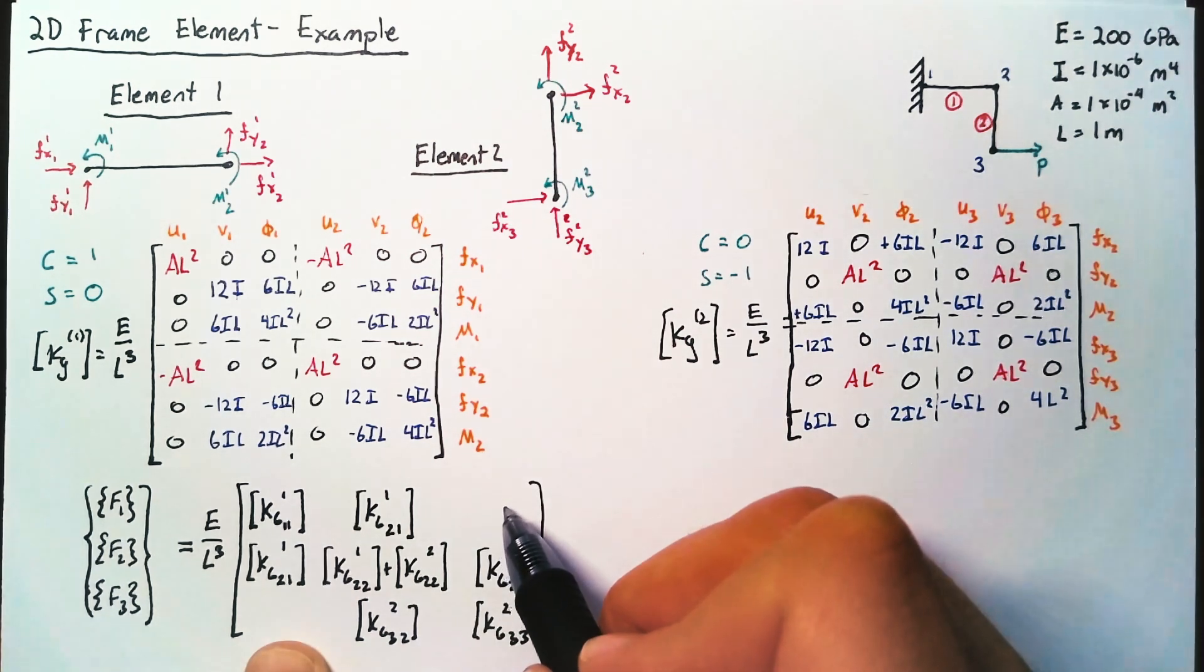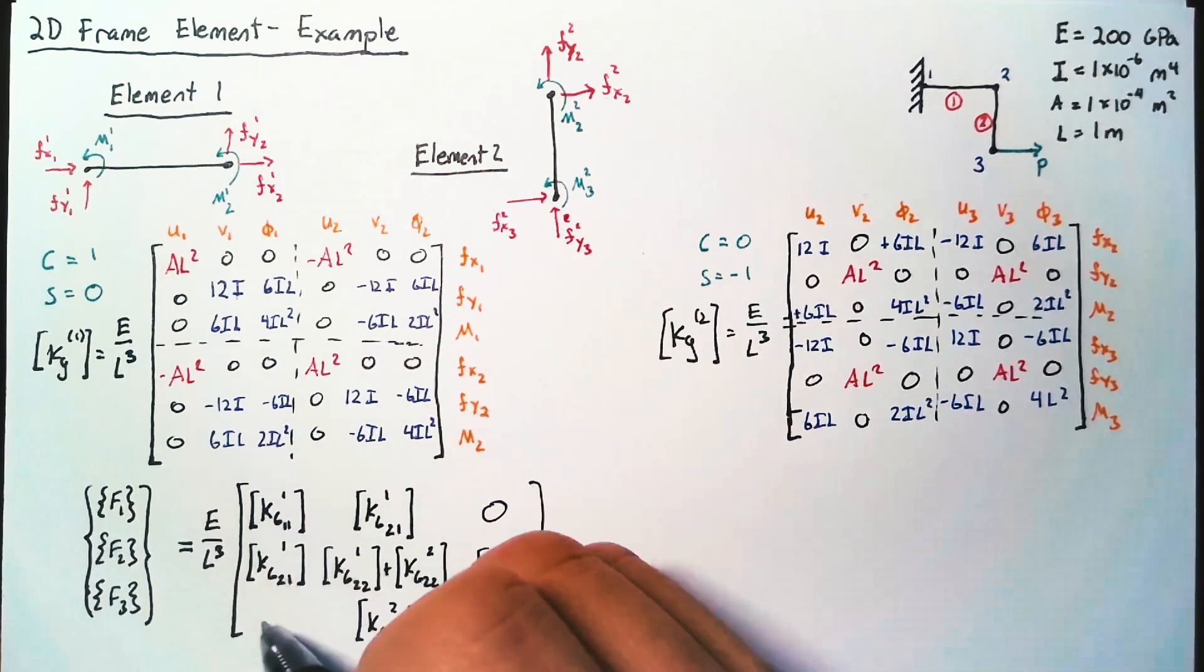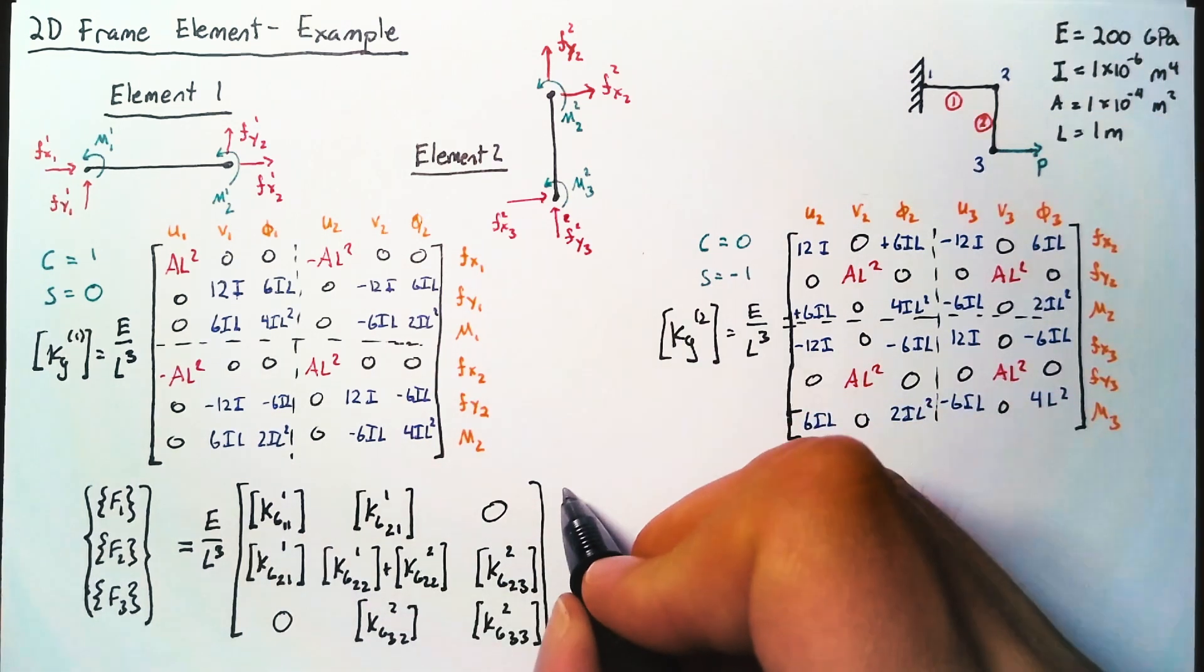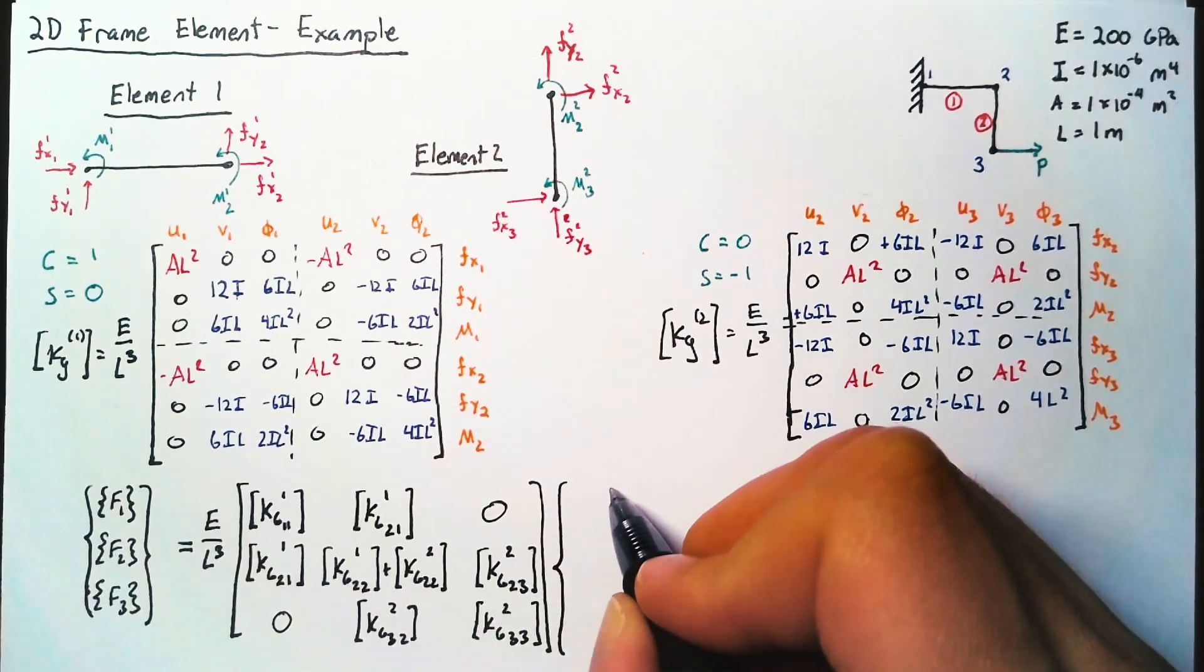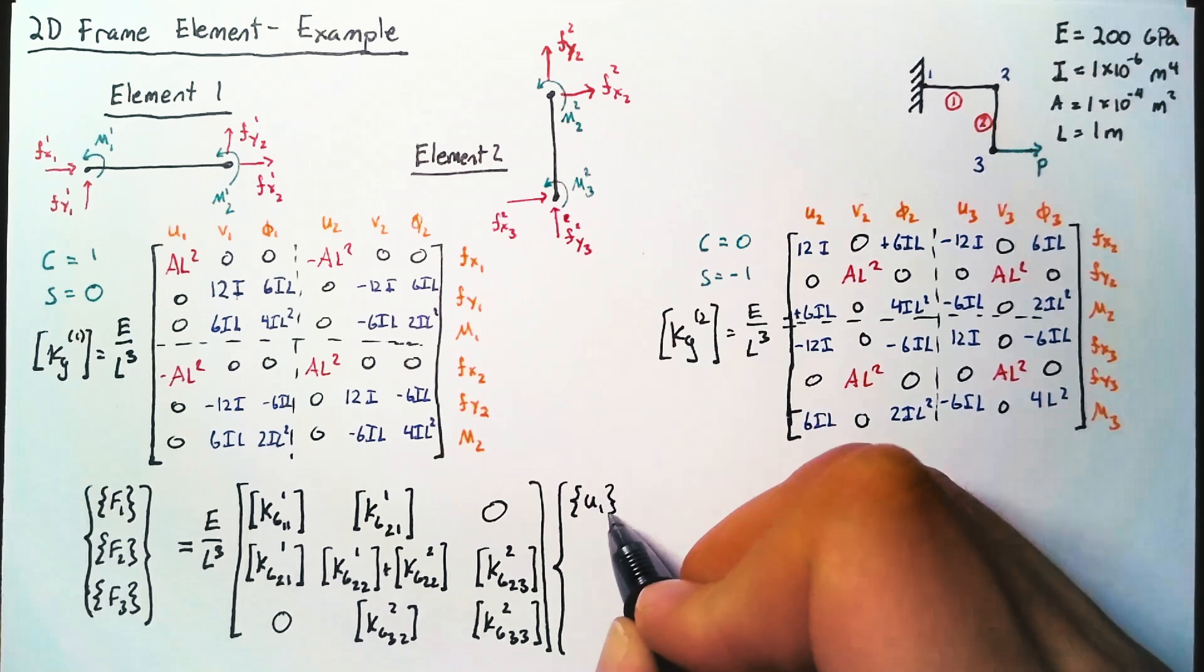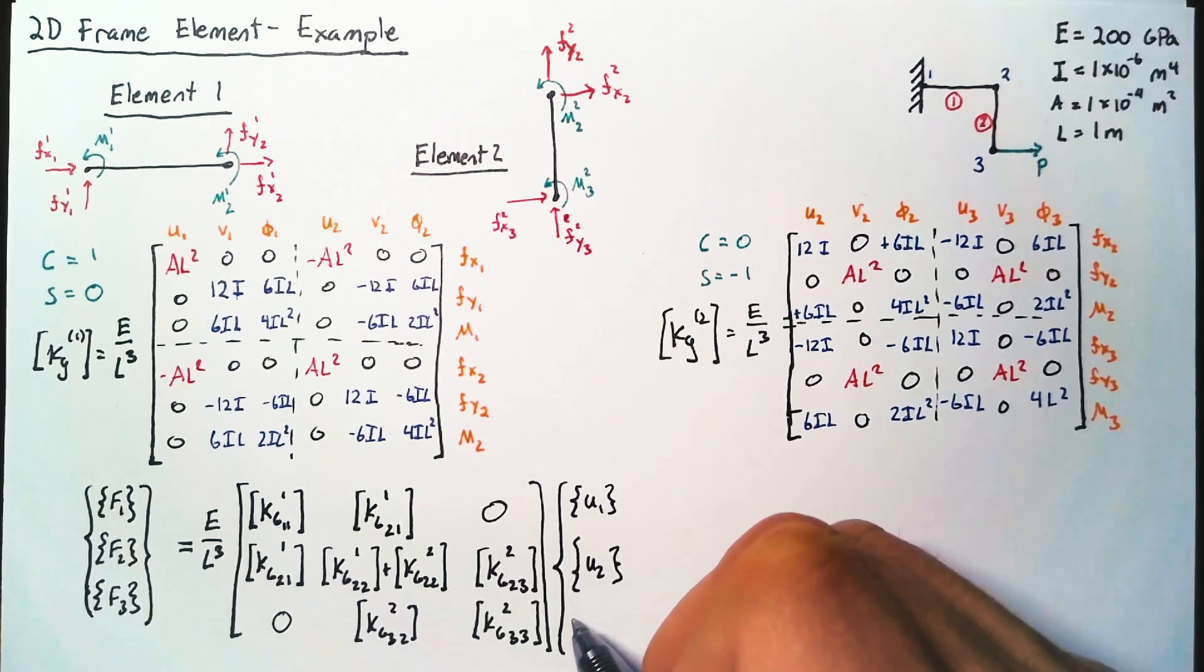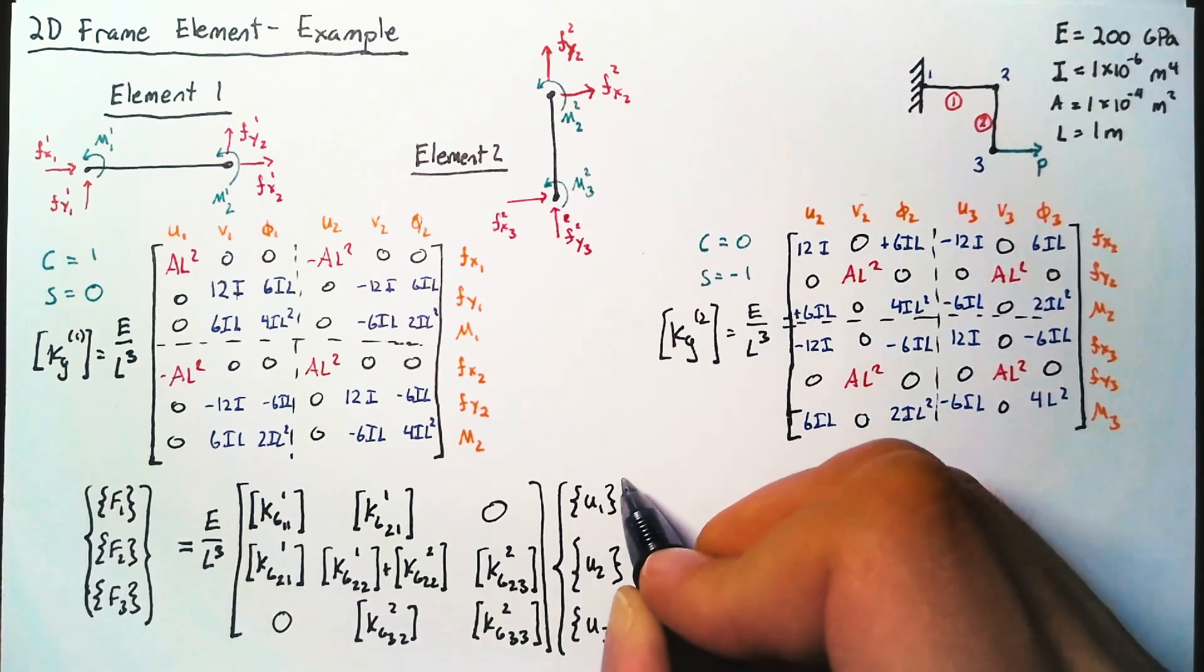We have no direct effect of the forces on node 3 from the displacements on node 1 or vice versa. So these are both 0. For our displacements, again, we're just going to have three subvectors, referring to the displacements on node 1, node 2, and node 3.